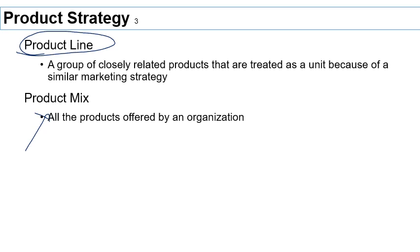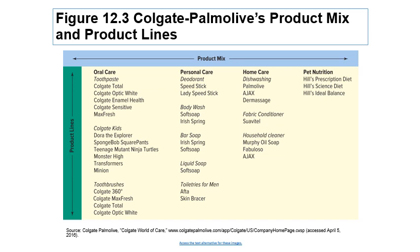Product lines are groups of products that are strategically similar in some ways — it could be the type of benefits they provide to the consumer, the way they are priced, or the way you sell them. Let me show you what I mean by product line and product mix using Colgate-Palmolive as an example — they sell many different types of products from toothpaste to cleaning products.